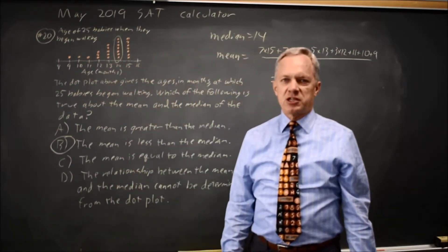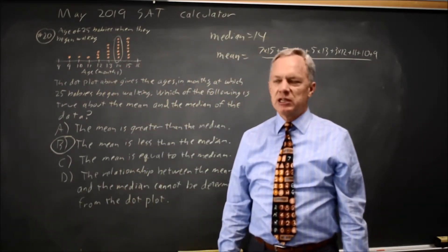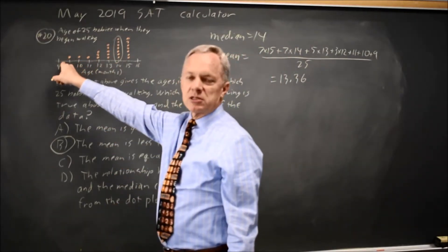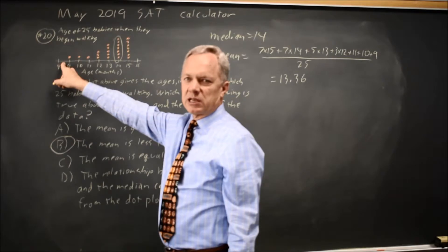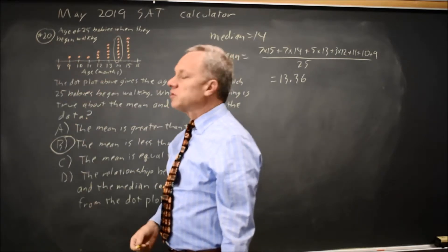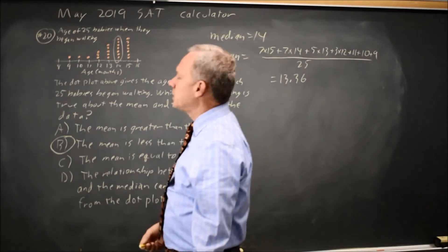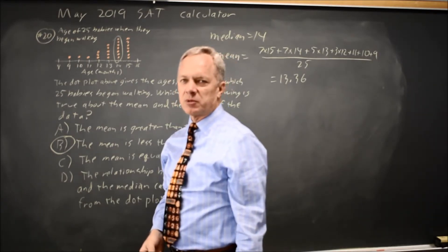Alternatively, a much faster answer, if you remember it, is that if you have a skewed distribution, which means a long tail on one side or outliers on one side, the outliers or the skew will pull the mean in the direction of those extreme observations.